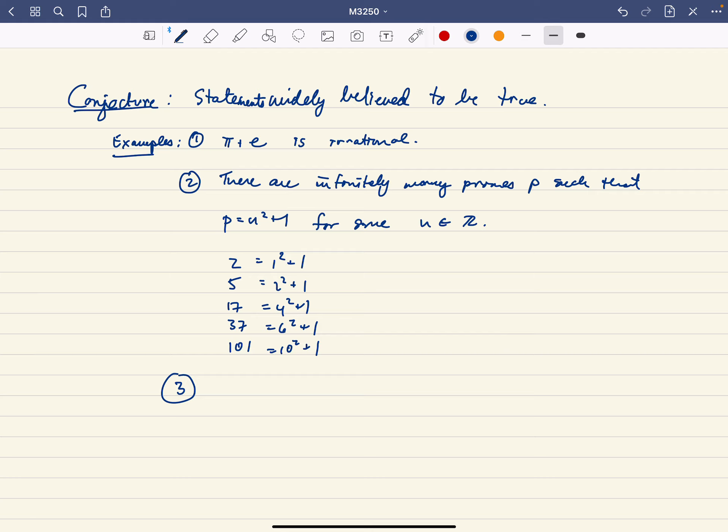So maybe we believe that it's true or not, but we don't have a proof. Finally, for example 3 of a conjecture, this is one of my favorite conjectures.